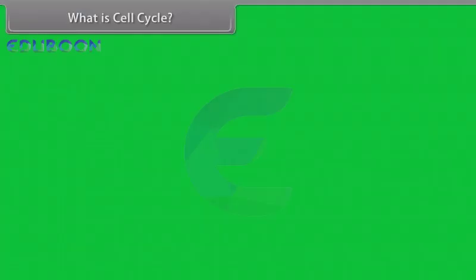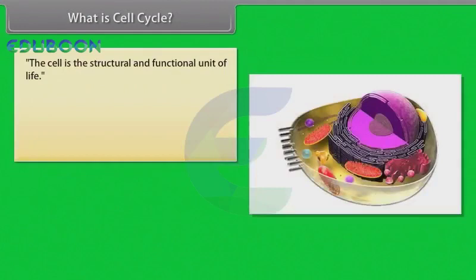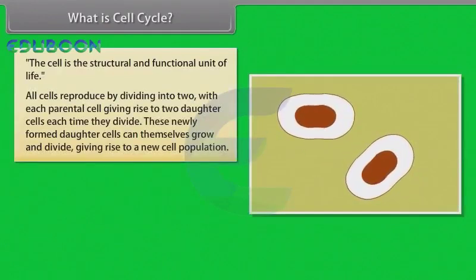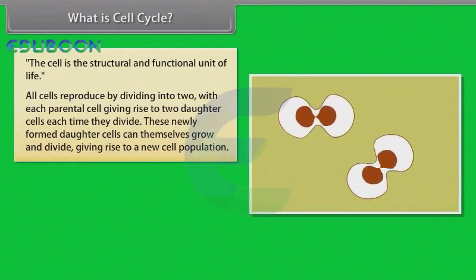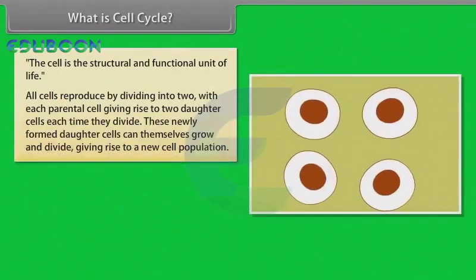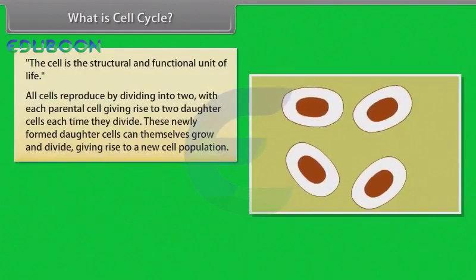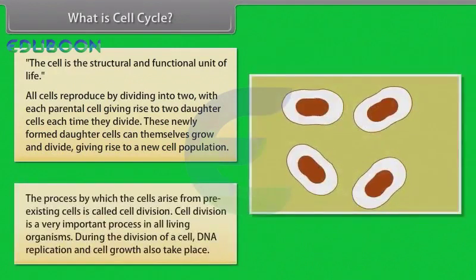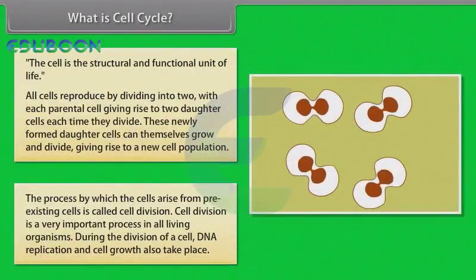What is cell cycle? The cell is the structural and functional unit of life. All cells reproduce by dividing into two, with each parental cell giving rise to two daughter cells. Each time they divide, these newly formed daughter cells can themselves grow and divide, giving rise to a new cell population formed by the growth and division of a single parental cell and its progeny. The process by which cells arise from pre-existing cells is called cell division. It is a very important process found in all living organisms.